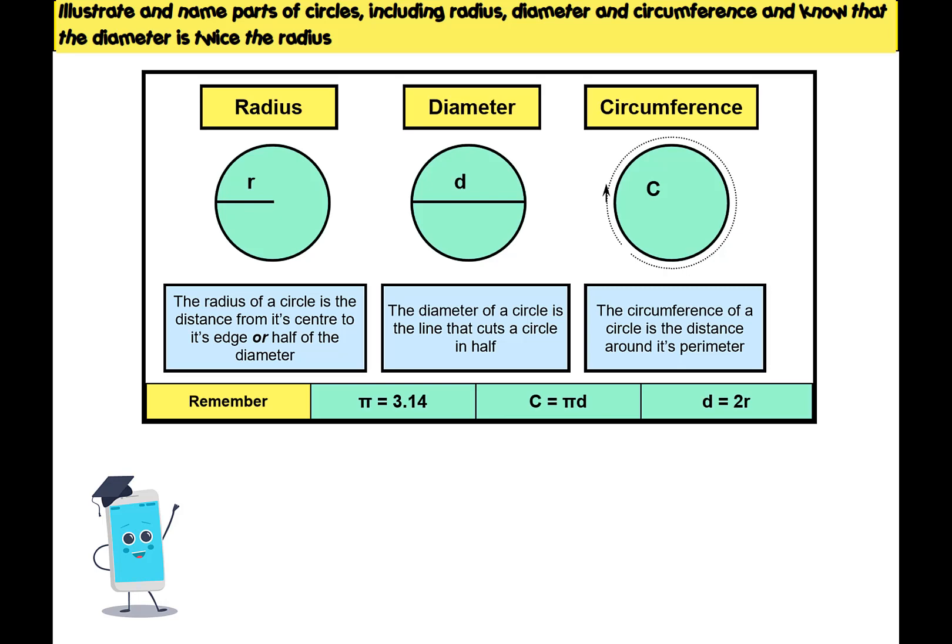Let's start with the radius. The radius of the circle is basically the distance from the centre of the circle to the edge. So if you took the centre of the circle and you drew a straight line to any point on the edge, it would always measure the same distance and that's called the radius.